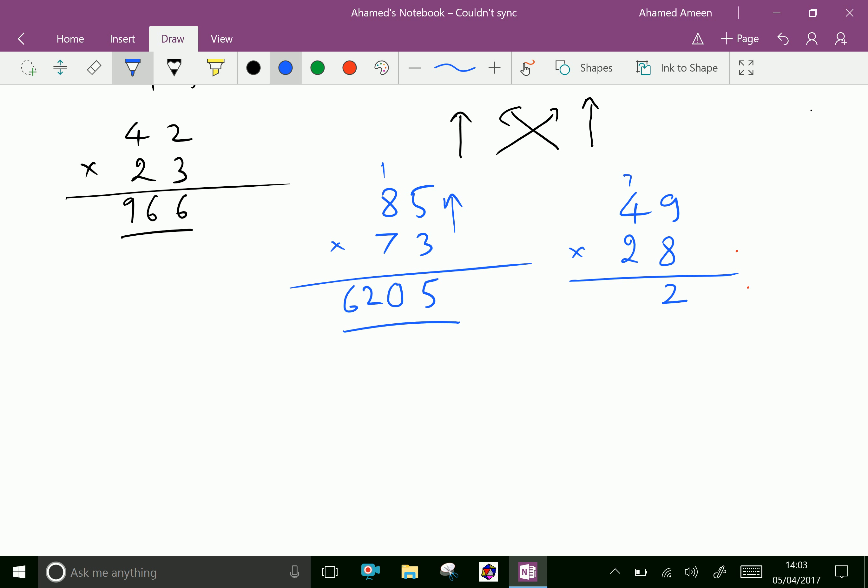Then 7 carries. 4 times 8 is 32, and 2 times 9 is 18. 18 plus 32 is 50, 50 plus 7 is 57, and 5 carries. 4 times 2 is 8, 8 plus 5 is 13. So the answer is 1372.